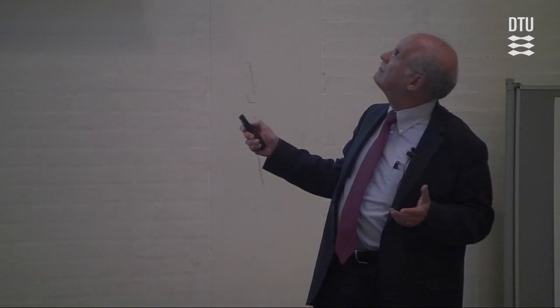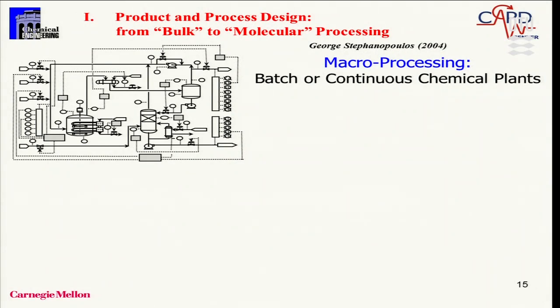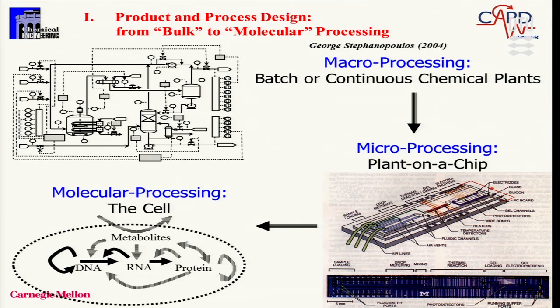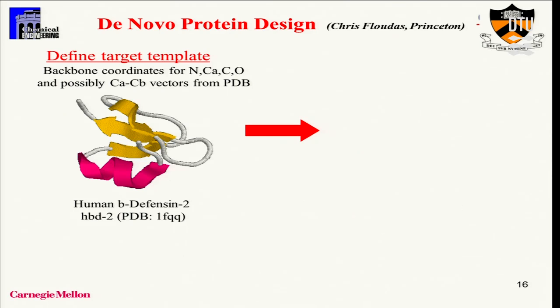Let me start with product and process design. An interesting idea from George Stephanopoulos is that concepts we learn about batch and continuous processes can be applied to microsystems — the concept of a plant on a chip still has the concept of a flow sheet, interactions, and control. Even at the molecular level, at the level of the cell, many processes taking place do mimic the behavior of a flow sheet. So the concepts developed at larger scales can be applied down to lower scales.